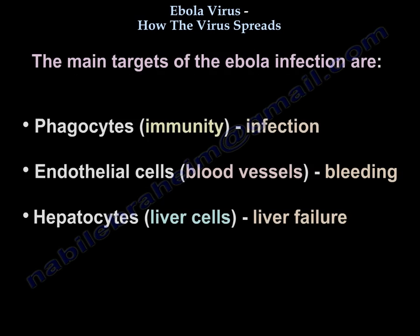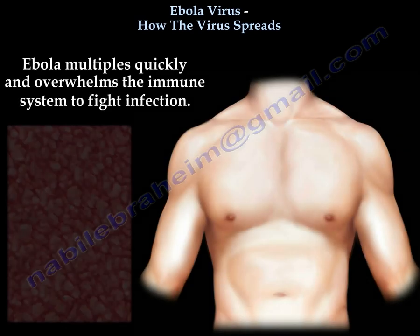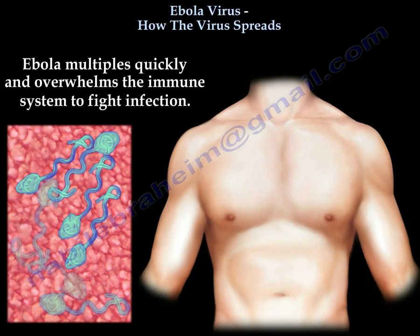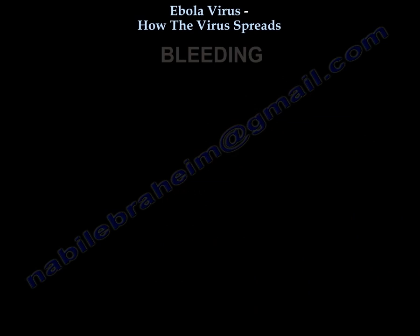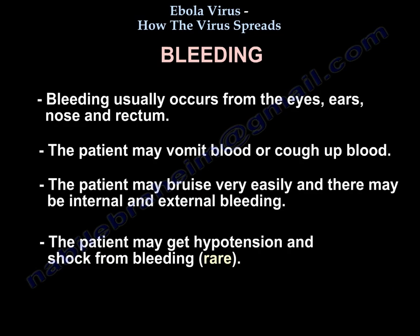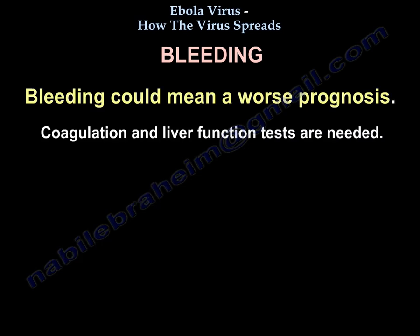The main targets of the Ebola infection are phagocytes, endothelial cells, and hepatocytes. Ebola multiplies quickly and overwhelms the immune system. Bleeding usually occurs from the eyes, ears, nose, and rectum; the patient may vomit blood or cough up blood. The patient may bruise easily, and there may be internal and external bleeding. The patient may get hypotension and shock from bleeding, which could mean a worse prognosis. Coagulation and liver function tests are needed.